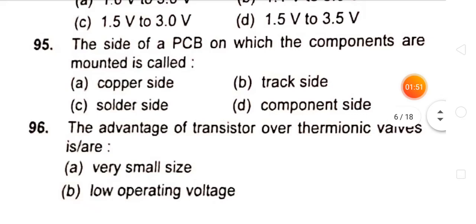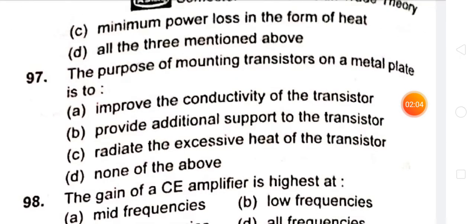The advantage of transistor over thermionic valves is that it is very small in size and its operating voltage is low, and so it has minimum power loss in the form of heat.